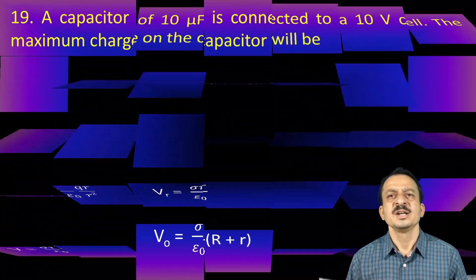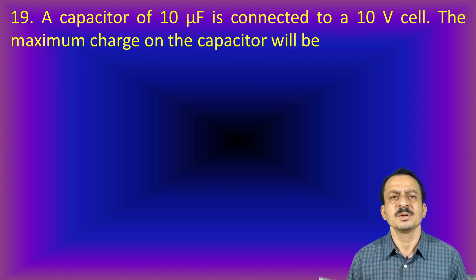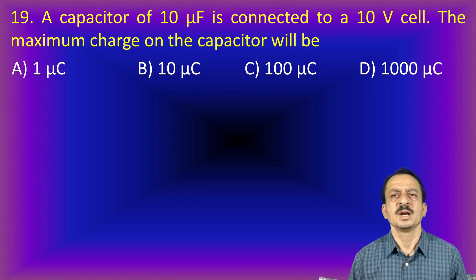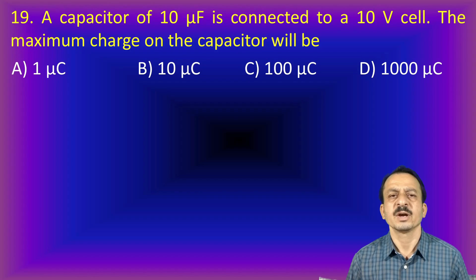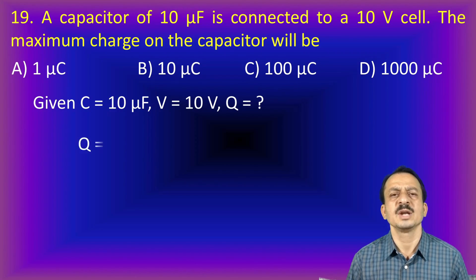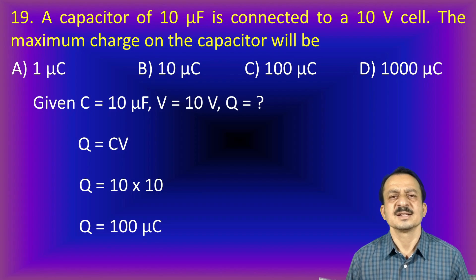Next problem: a capacitor of 10 microfarad is connected to a 10 volt cell. The maximum charge is Q = CV = 10 × 10 = 100 microcoulomb. The answer is C.